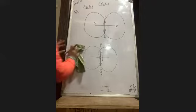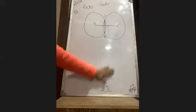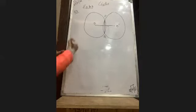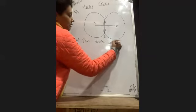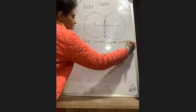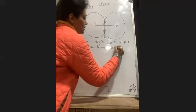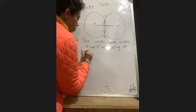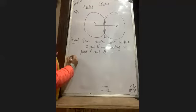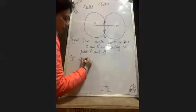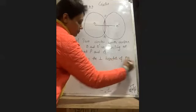So in this question, write down: Given — two circles with center O and O dash intersecting at points P and Q. To prove — O O dash is the perpendicular bisector of PQ. This means we have to prove that PM is equal to MQ.